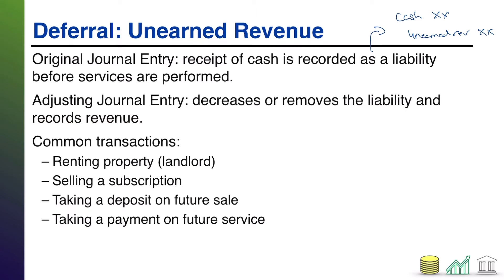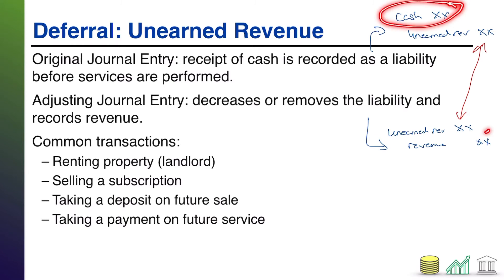So basically, once you've done the job, you get to record this: debit unearned revenue — the liability goes away — and credit actual revenue.